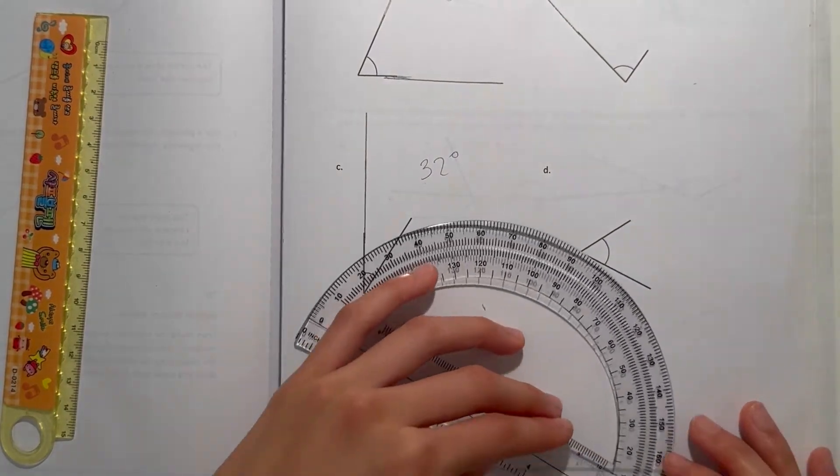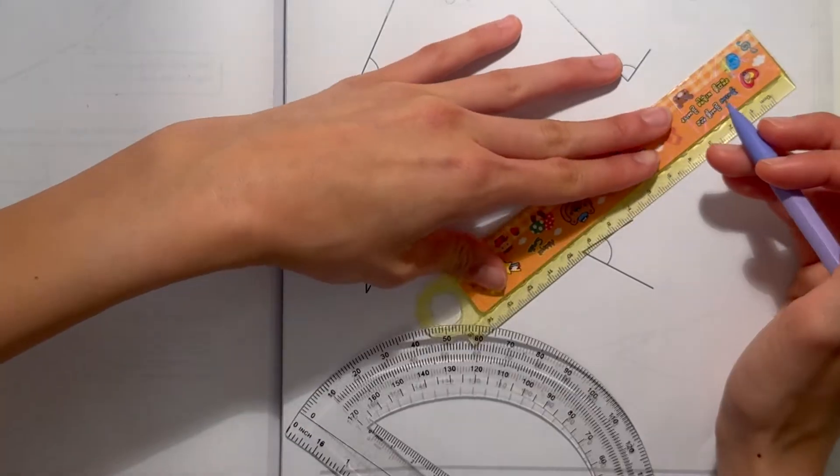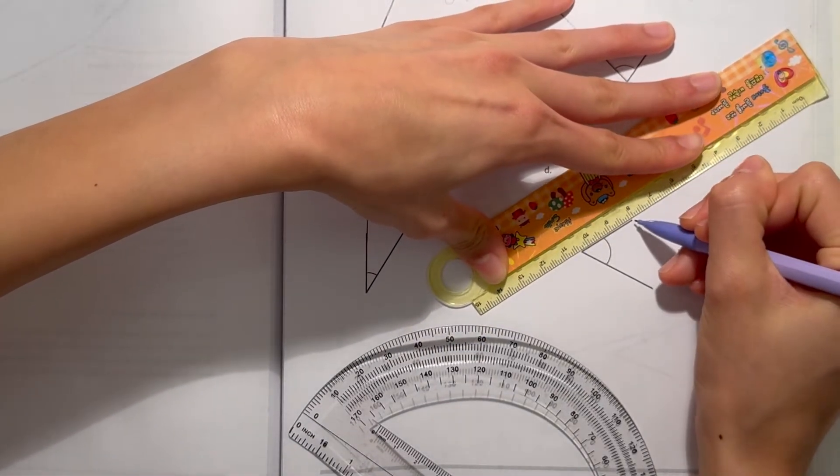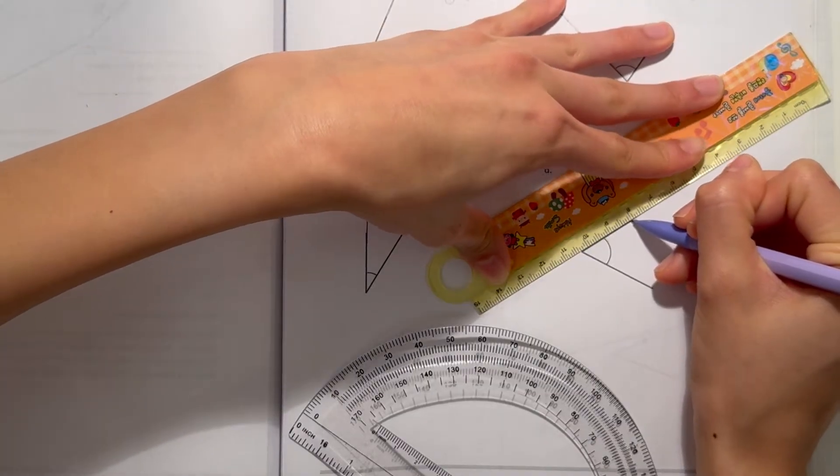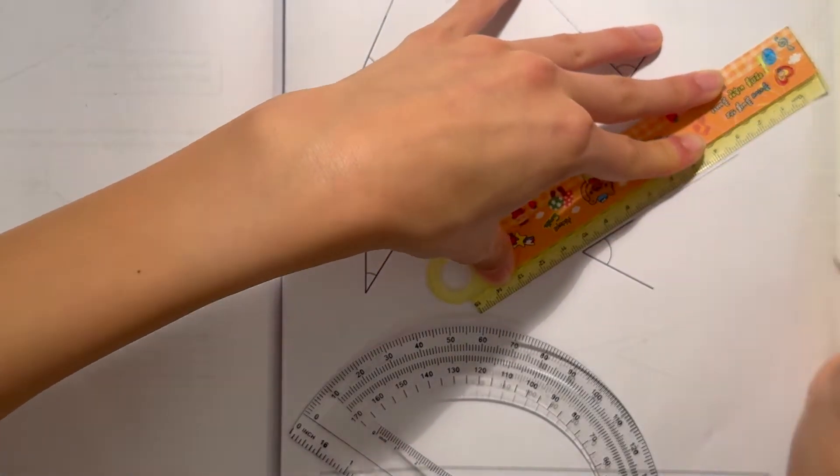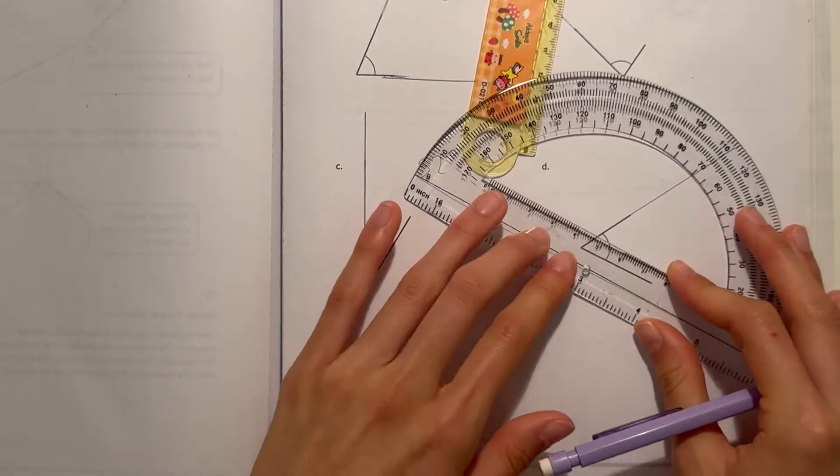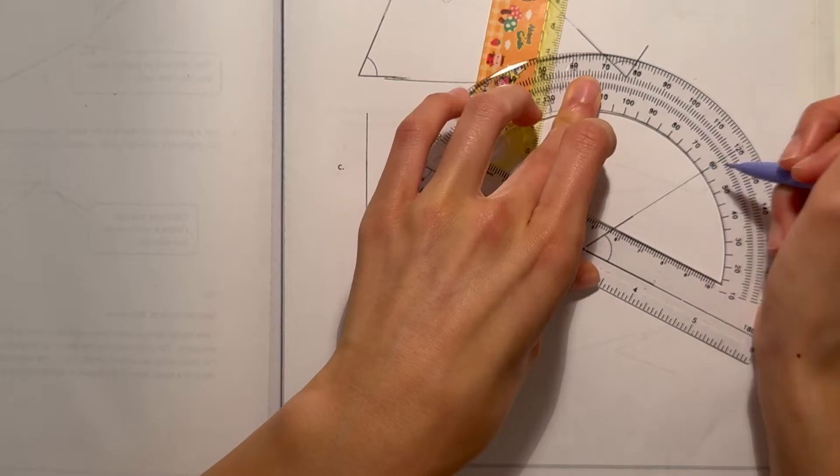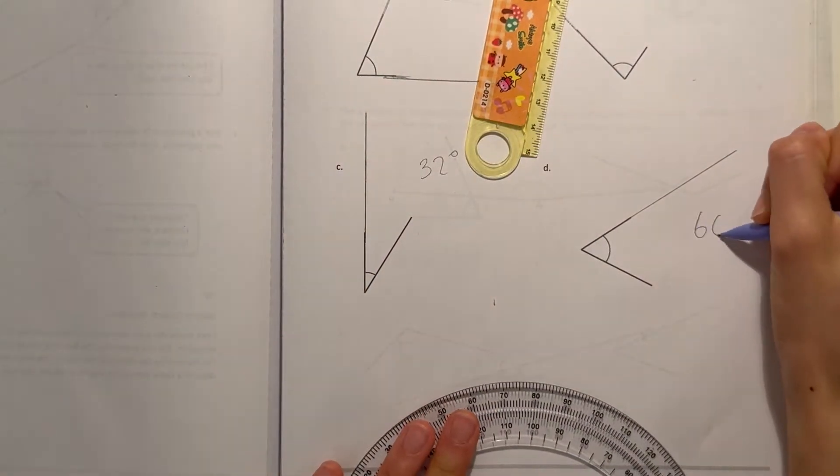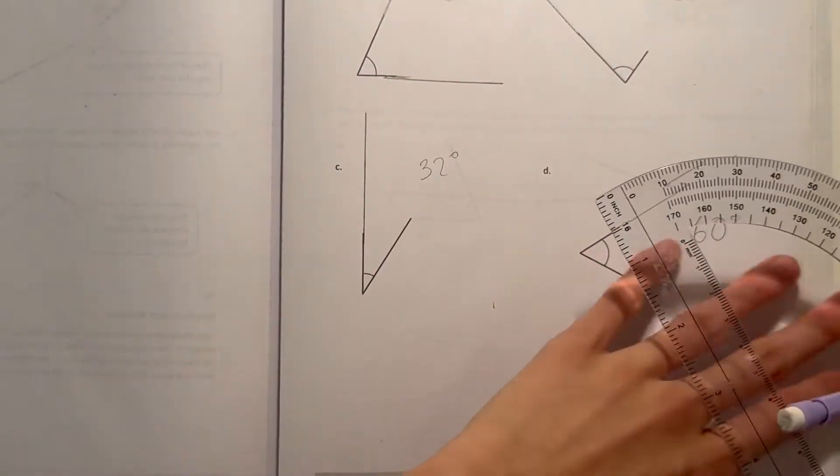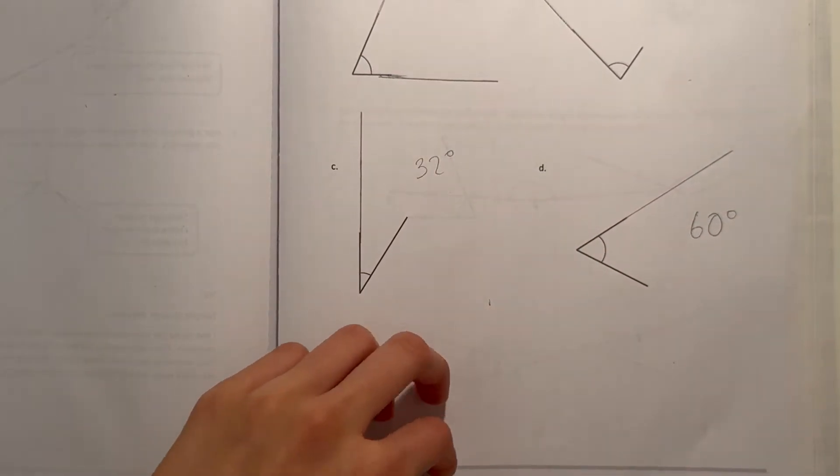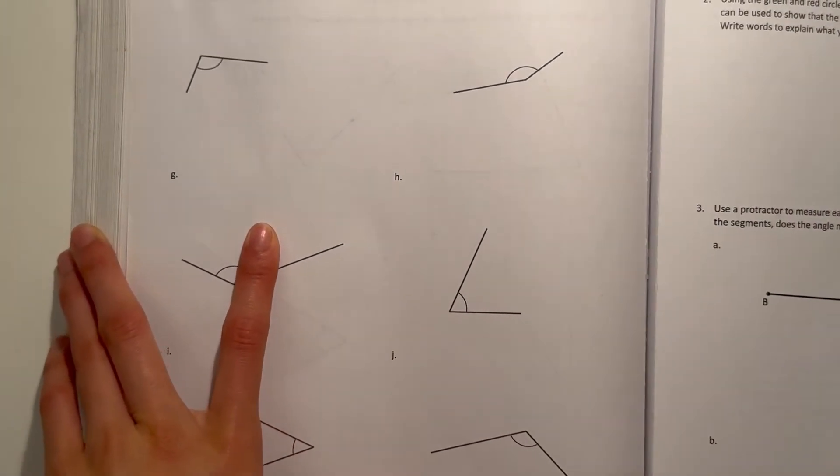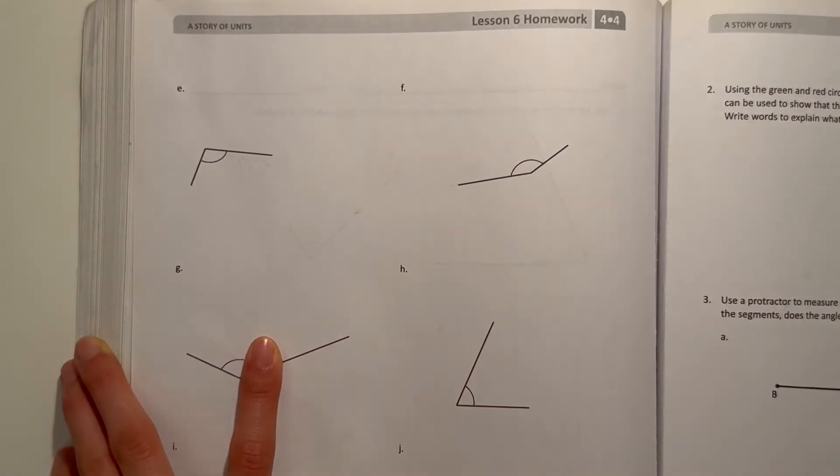And now for D. Let's extend the angle's leg. Make sure the little circle matches up, match up the legs. This one goes exactly at 60, so this angle is 60 degrees. Next page.